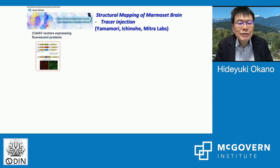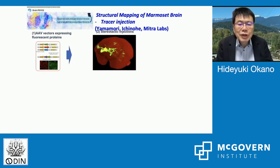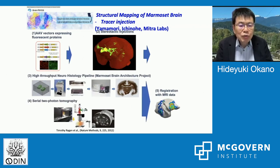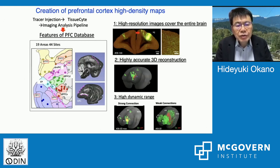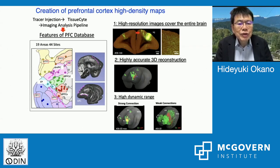Regarding tracer data, we have used AAV vectors expressing fluorescent proteins. The virus was injected at particular sites by stereotactic injection. Axon projections were traced through a high-throughput neurohistology pipeline using serial two-photon tomography, and this data was registered with MRI data. We created a prefrontal cortex high-throughput neurohistology map through tracer injection, and an imaging analysis pipeline was developed.